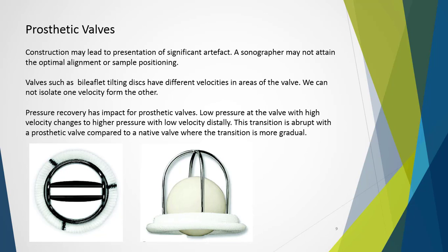The phenomenon of pressure recovery also has an impact for prosthetic valves. When investigating pressure gradients, blood moves with low pressure and high velocity through the valve, transitioning to relatively high pressure with low velocity. This transition is abrupt with a prosthetic valve compared to a native valve where the transition is more gradual. This in turn may lead to an overestimation of true gradients.